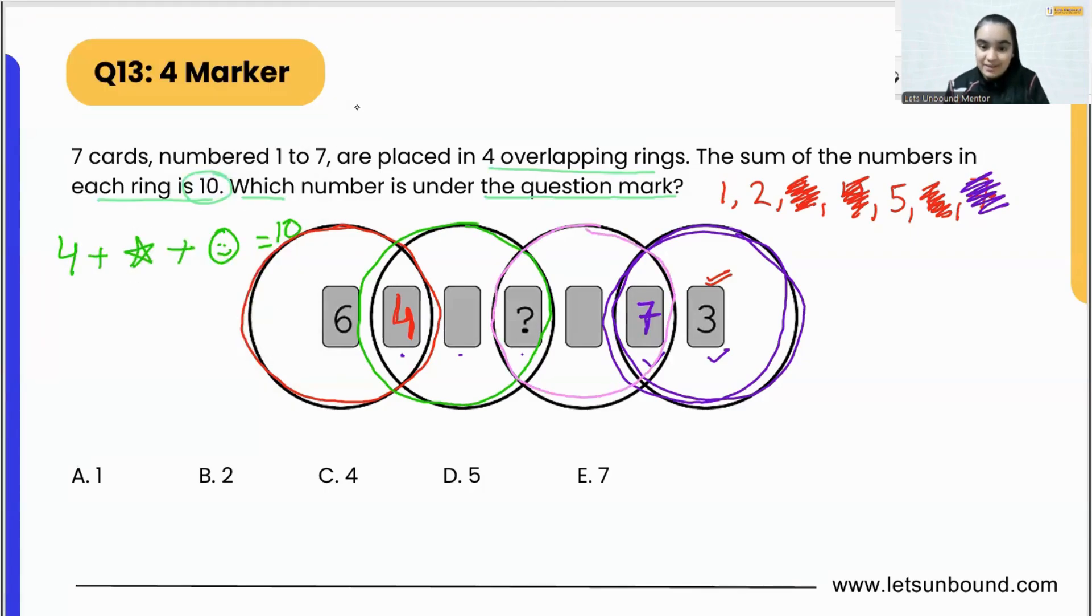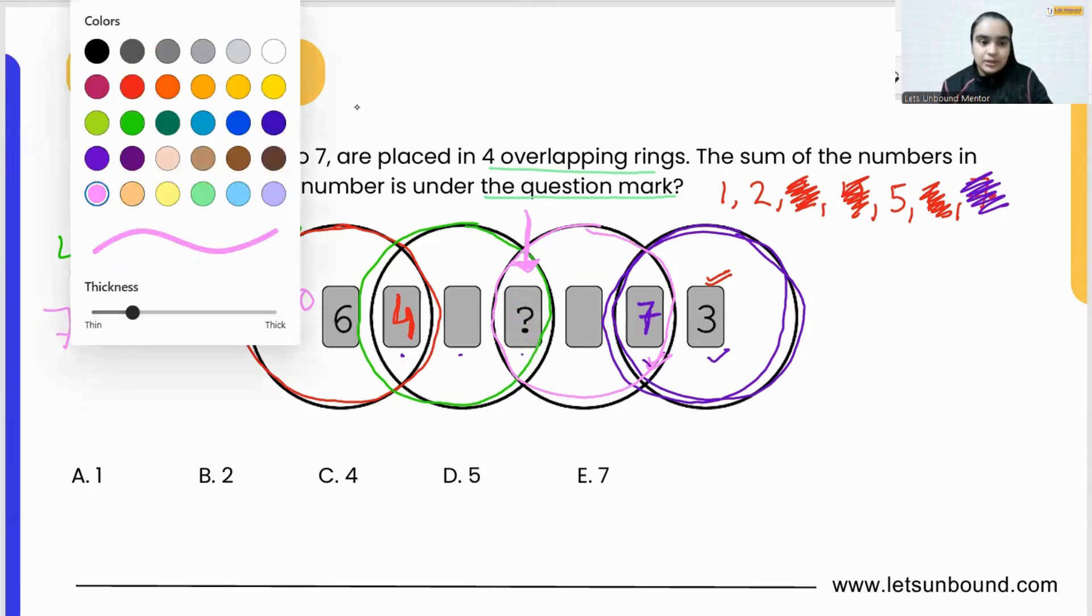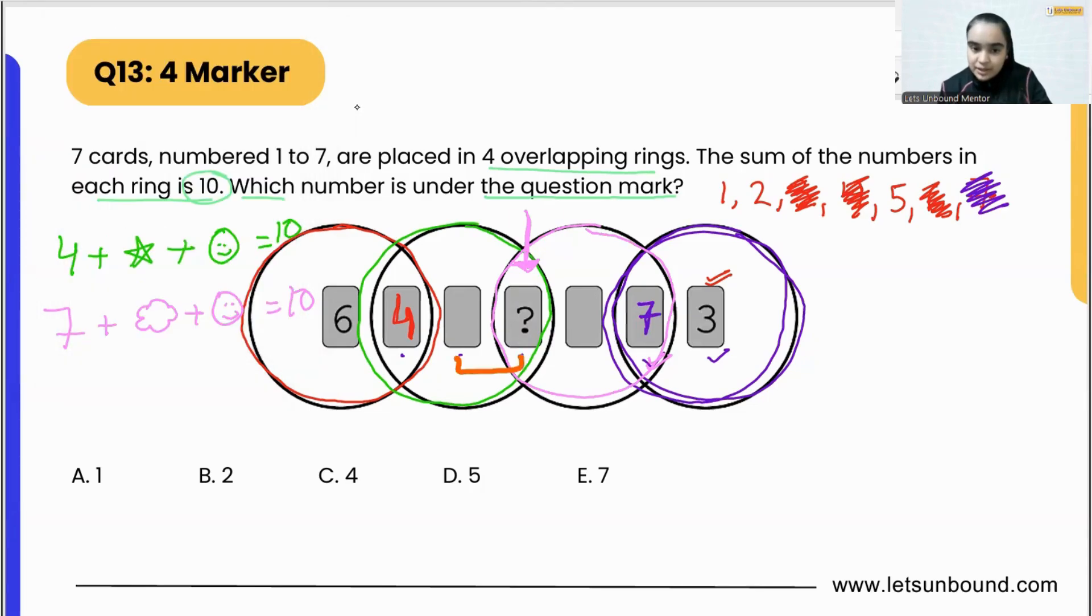Here as well we are having 7 already. So 7 plus something plus the same thing which we need to add to 4 equals 10. So our end goal is to find out what is going to be the value of our smiley, the common thing which is common between 7 and 4 as well. So here we know that this part should be equivalent to 6, right? 4 plus 6 is 10. And we also know that 7 plus 3 is 10. So these two should add up to 3.